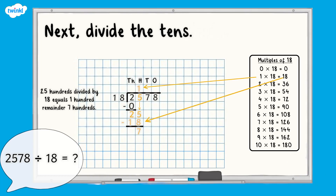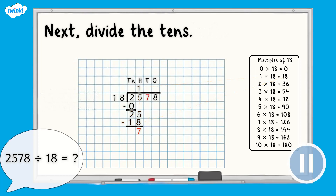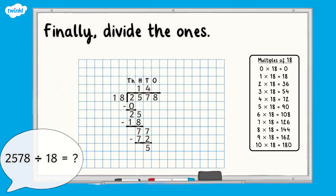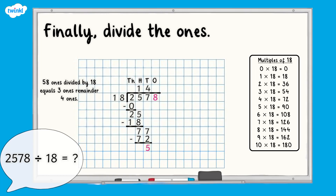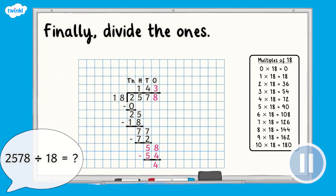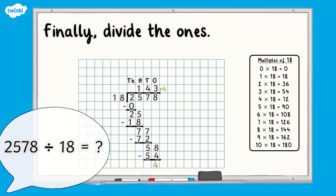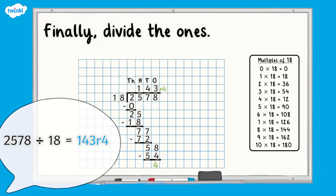Next, divide the tens. Pause here and complete this step. Seventy-seven tens divided by 18 equals four tens remainder five tens. Did you complete this step correctly? And finally, divide the ones. Pause here and complete this step. Fifty-eight ones divided by 18 equals three ones remainder four ones. 2,578 divided by 18 equals 143 remainder 4.